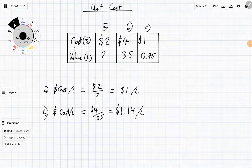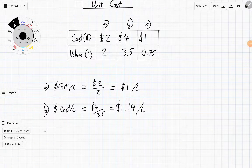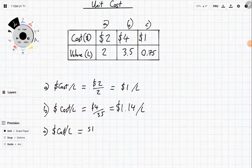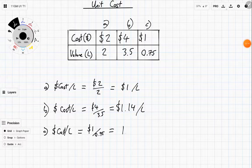And for the last one, C, well, the cost per litre is going to be $1 divided by 0.75 litres, which gives us, again, another long decimal, 1.333, which is going to round to two decimal places because dollars and cents, $1.33 per litre.